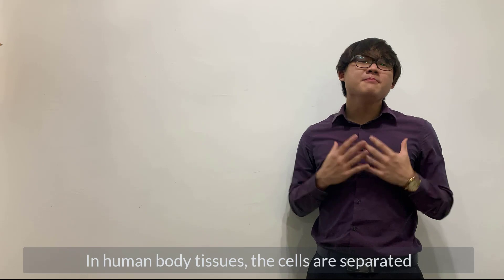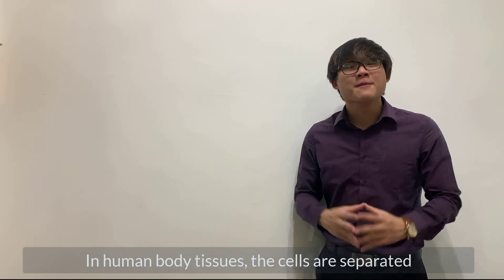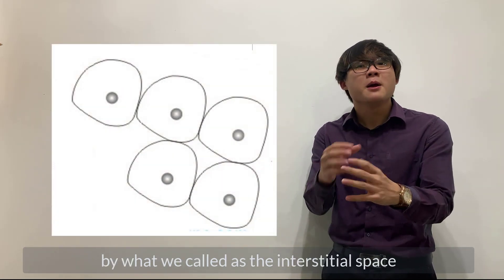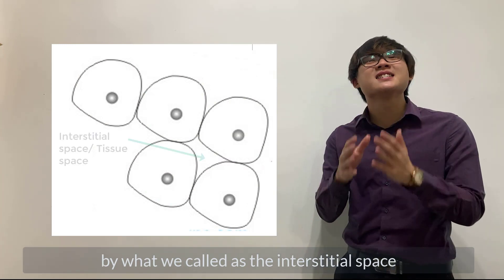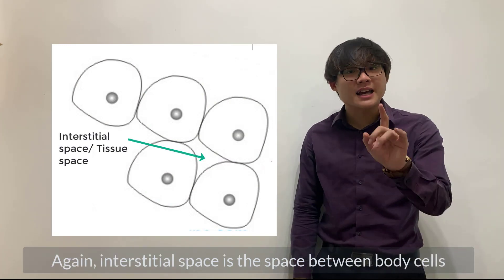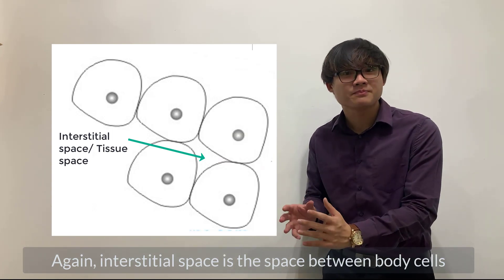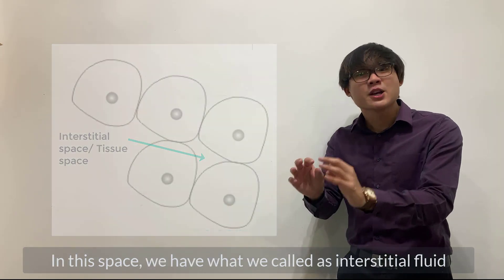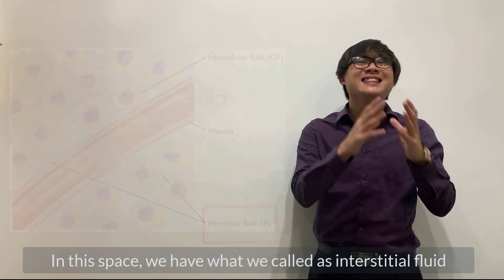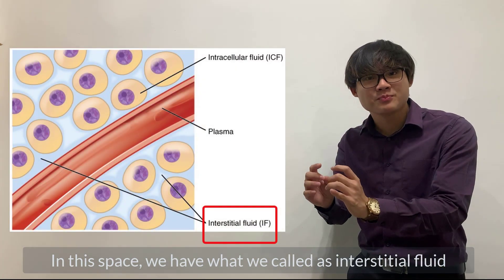In human body tissues, the cells are separated by what we call the interstitial space. Again, interstitial space is the space between body cells. In this space, we have what we call interstitial fluid.